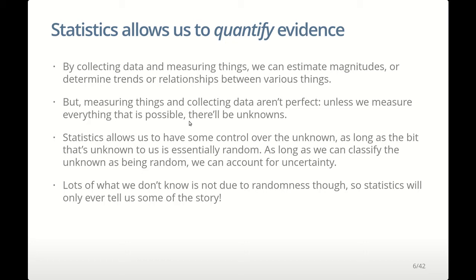If we measure a random subset, the unknown part — the part we haven't measured — is due to the fact that we've only measured a random subset. If the thing we're measuring differs from the population just due to randomness, statistics allows us to quantify the amount of uncertainty we will have. We can measure the thing and also measure how much we think we might be wrong. But statistics can only account for uncertainty in cases where things are random.